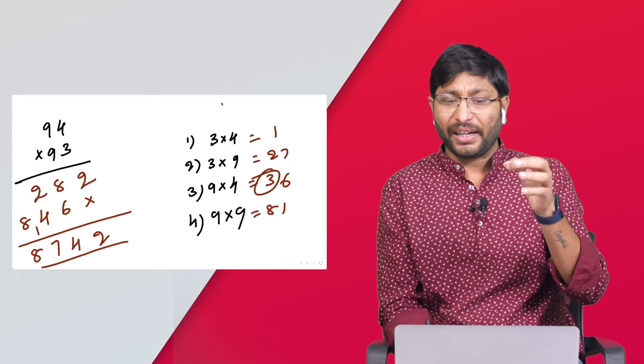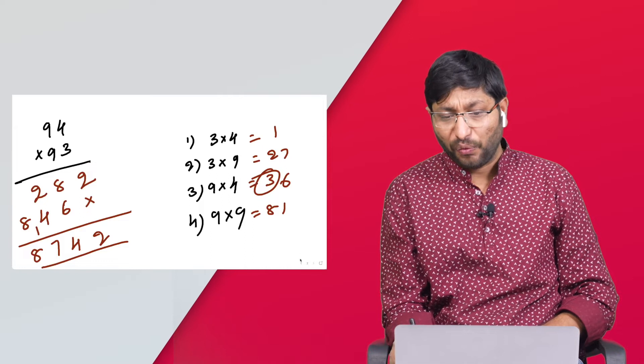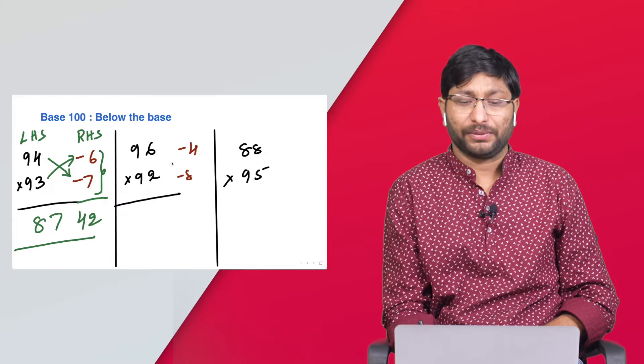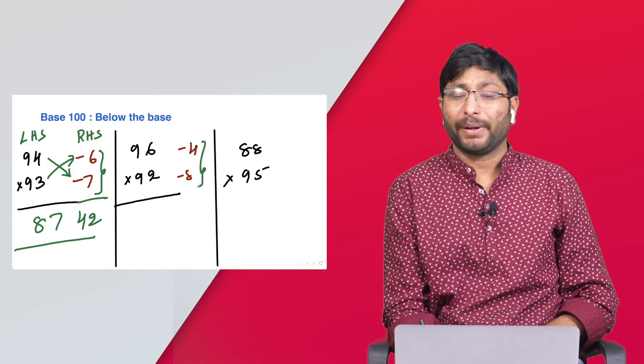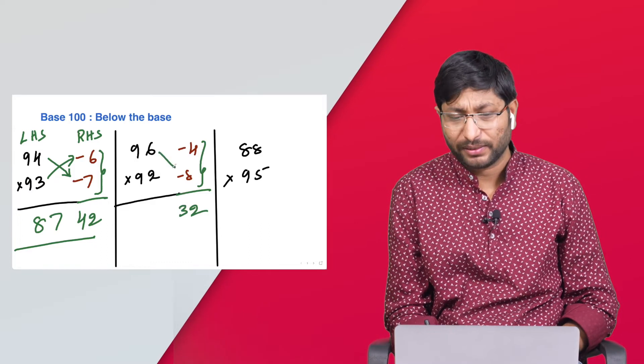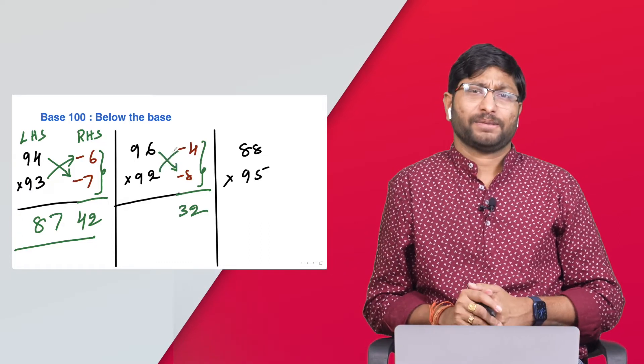Simple. 100 minus 4, right hand side 4 times 8 is 32. Cross subtraction: 94, 92 minus 4, or 96 minus 8, that is 88. One step.